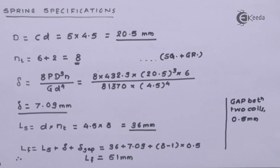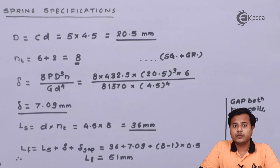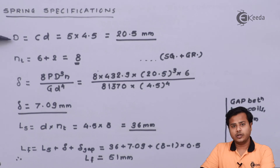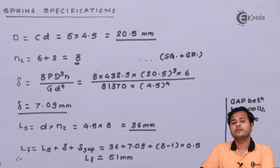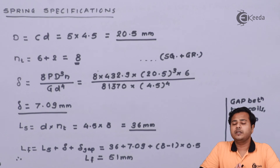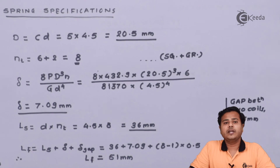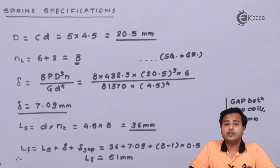Let me quickly recap what we have done. We started with the material properties, then found parameters like the Wahl's factor. We used a trial-and-error method for the wire diameter and induced shear stress. After the fourth trial the design was found safe, giving a wire diameter of 4.5 millimeters. Based on that we found the mean coil diameter, total number of coils, actual deflection, solid length, and free length. These parameters are sufficient to fully describe the spring. In the next part we will look at spring design considering fluctuating or variable loads.